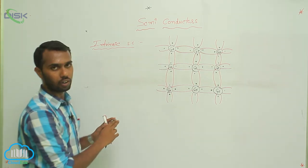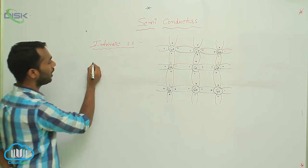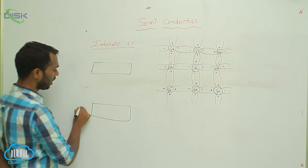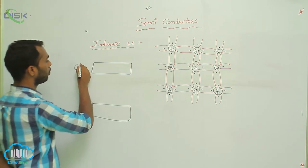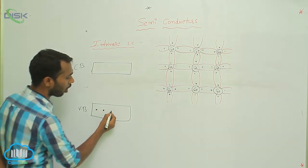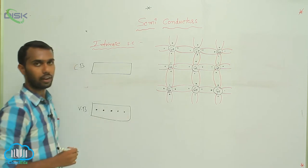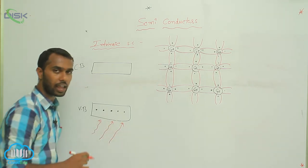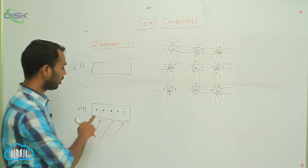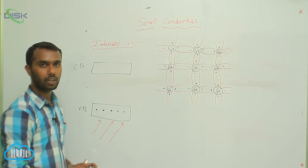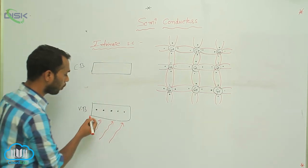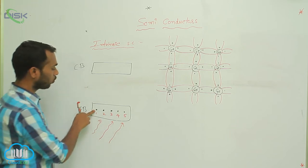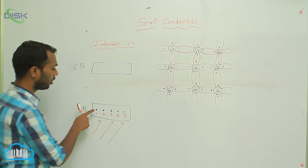Now let's observe the band diagram for intrinsic semiconductors. There is a valency band and a conduction band. Electrons are always present in the valency band. If you apply some external energy to the semiconductor, these valency electrons absorb the energy and jump to the conduction band.